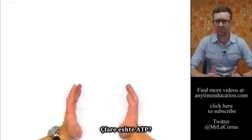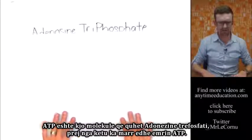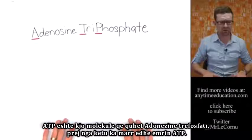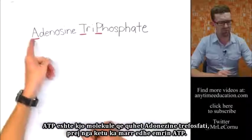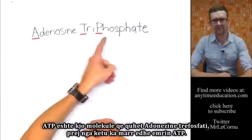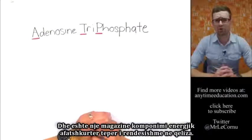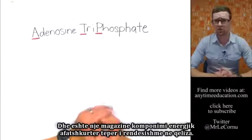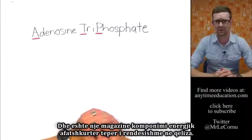What is ATP? ATP is this molecule called adenosine triphosphate — that's where it gets its name from, A-T-P. And it's a really important short-term energy storage compound in cells.